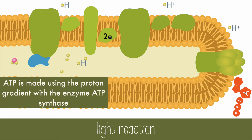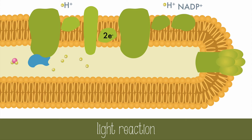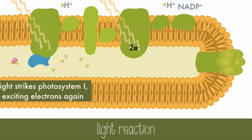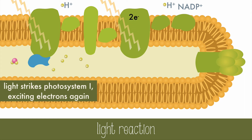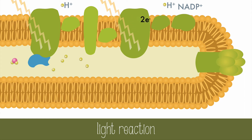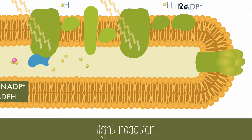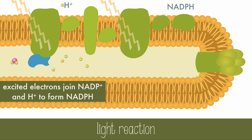Our electrons, however, are still not done with their journey. At the end of the electron transport chain is Photosystem I. Light strikes Photosystem I and excites electrons, which are passed to ferredoxin. The electrons are replaced by ones carried from the electron transport chain. Two molecules of ferredoxin are used with NADP reductase to reduce NADP to NADPH. This is the final electron acceptor, and this molecule will be used in the light-independent reactions.